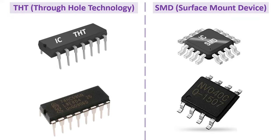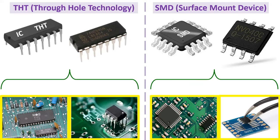Integrated circuits can be produced in THT type, or through-hole technology, to be soldered to punched cards, or in SMD, or surface mount device cases, to be soldered on a circuit board. THT ICs can be easily used by mounting on a breadboard or soldering to a perforated plate and printed circuit board. SMD ICs, on the other hand, are much smaller because they are designed for use on circuit boards produced by machines.